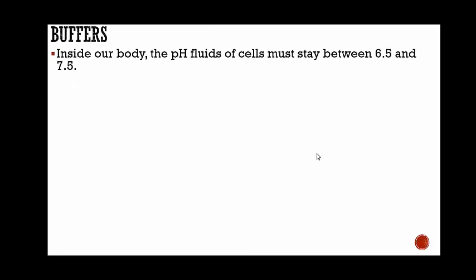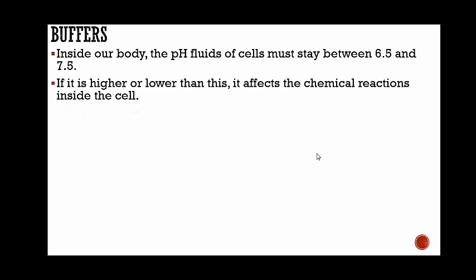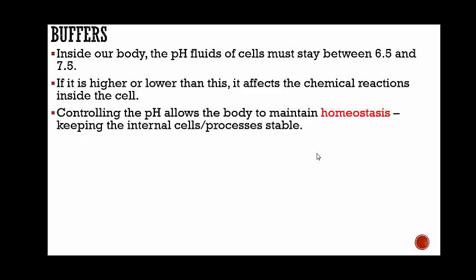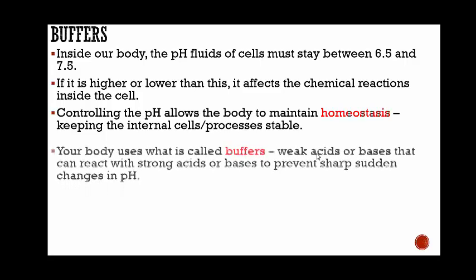Buffers. Inside our body, the pH fluids of cells must stay between 6.5 and 7.5, very close to the neutral range. If it's higher or lower than this, it affects the chemical reactions inside the cell. Controlling the pH, keeping the fluids between 6.5 and 7.5, allows the body to maintain homeostasis, keeping the internal cells or processes stable.